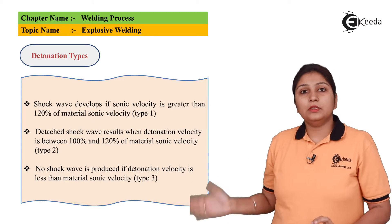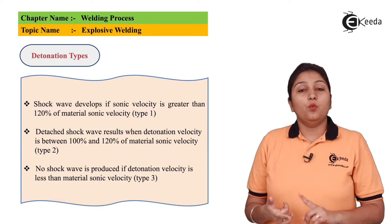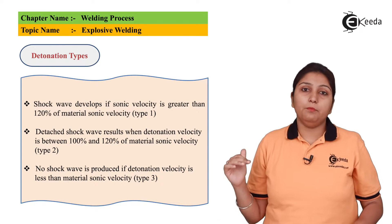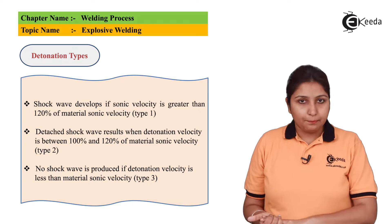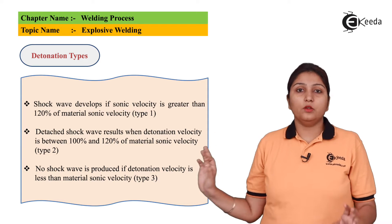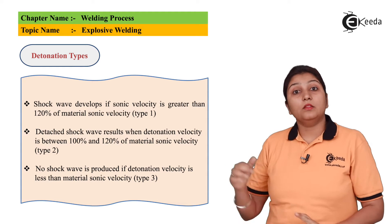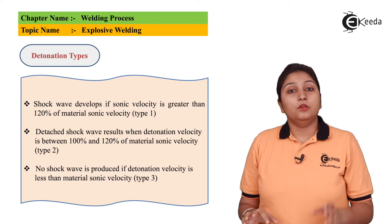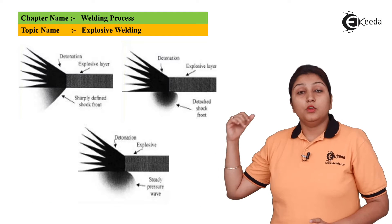These are some general three types of detonation parameters. The first type says that when your sonic velocity is greater than 120% of your material velocity, then a shockwave happens. The second is a detached shockwave is produced when your sonic velocity is between 100 to 120. And the third is no shockwave is produced when your material velocity is less than your sonic velocity.